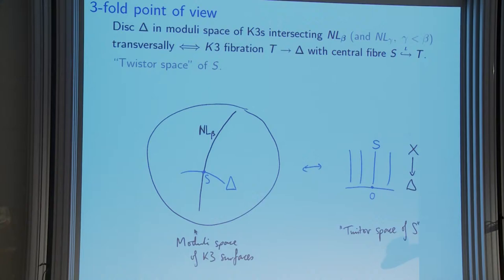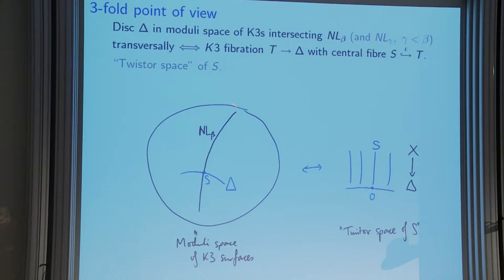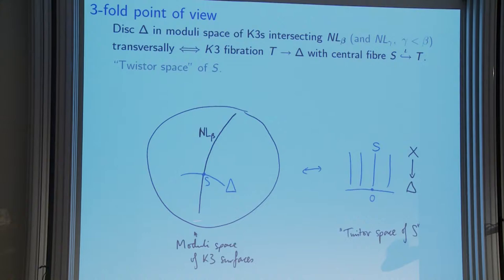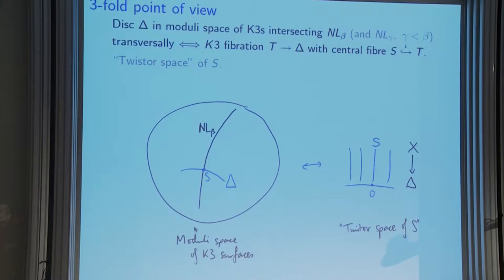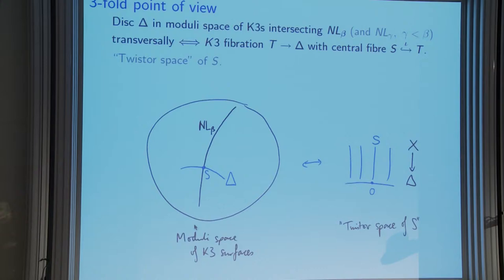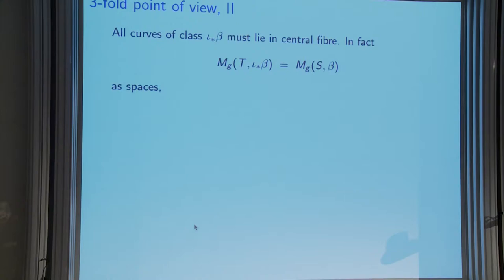There's a threefold point of view. You take a disk in the moduli space of K3s intersecting this Noether-Lefschetz divisor transversely, giving a K3 fibration over the disk with the K3 we care about at the origin. Really what you're doing is considering curves in the fibers of this fibration in ordinary Gromov-Witten theory. If you're just dealing with a single K3 you could move it off the divisor and get zero, but if you consider a disk you can't — it always intersects.